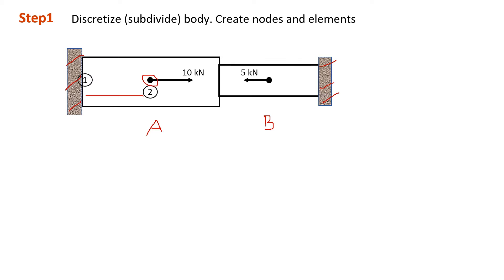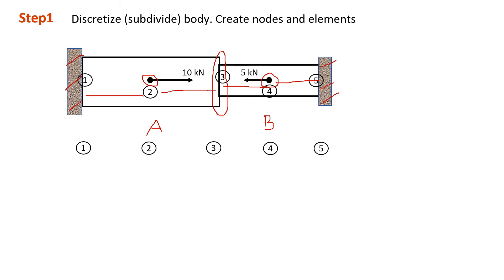We create node 2 at the next significant point. Moving along, where nothing happens we skip. Then we see a change of size — a change of cross-sectional area or change of material — so we create another node to account for that. Continuing along the bar, we find another point load acting on the structure, so we create node 4. Moving to the end of the bar, we create node 5. So in this case we have 5 nodes.